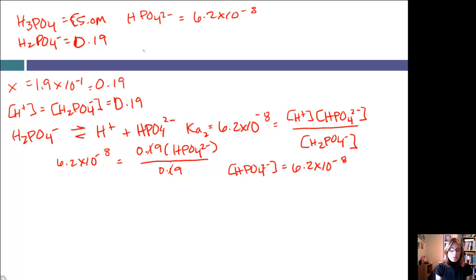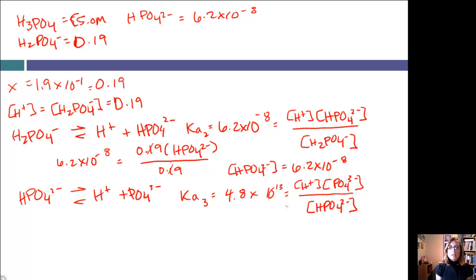We still need to solve for PO4-3. If we write the equation for that, we've got our HPO4-2 going to H+ plus PO4-3. This is Ka sub 3, and that value is 4.8 times 10 to the negative 13. That is equal to H+ times PO4-3 divided by HPO4-2.